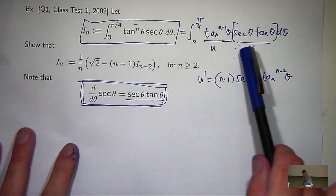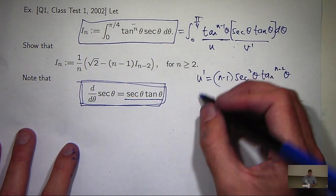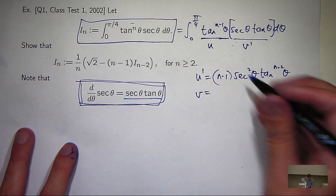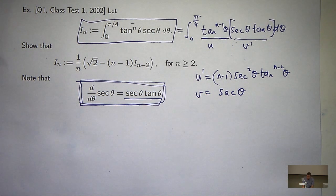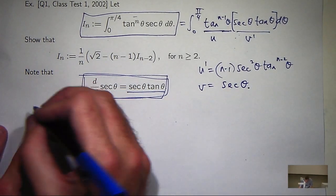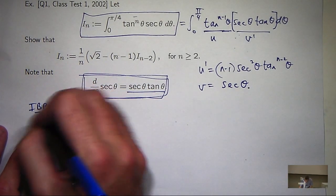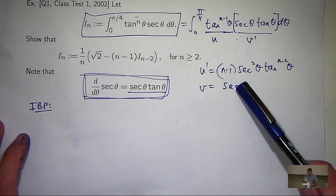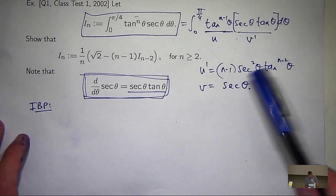And if I integrate this, what am I going to get? Sec theta. So now, under those choices, what I can try to do is integrate by parts. So it's going to be u times v minus the integral of the product that we just thought up.